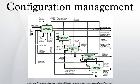Configuration management started in the Department of Defense in the 1950s as a technical management discipline for hardware material items, and it is now a standard practice in virtually every industry. The CM process became its own technical discipline sometime in the late 1960s when the DoD developed a series of military standards called the 480 series that were subsequently issued in the 1970s.